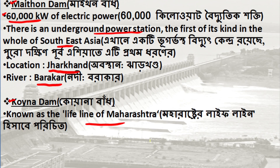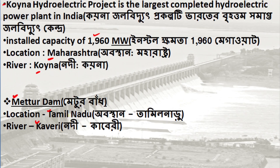Maithon Dam produces 60,000 kW of energy, and it has South East Asia's first underground electricity power station. Koyna Dam is the lifeline of Maharashtra and has a capacity of 1,960 megawatts.